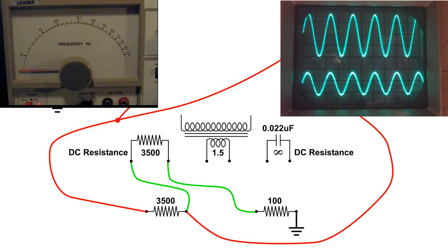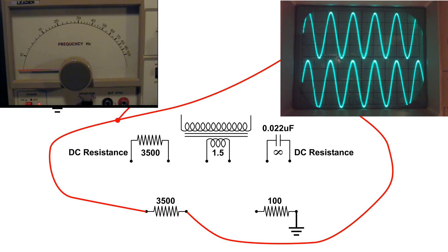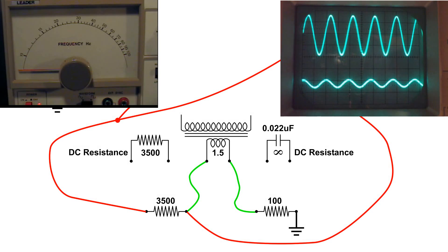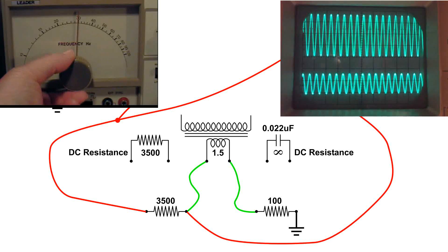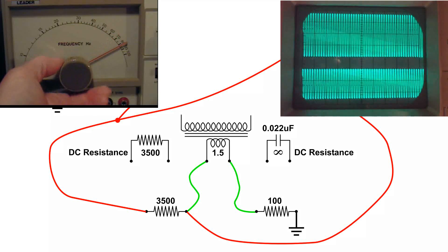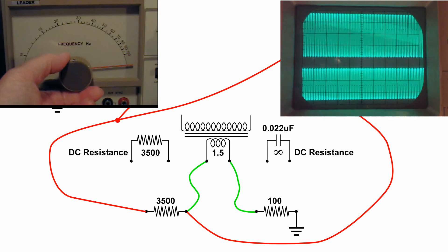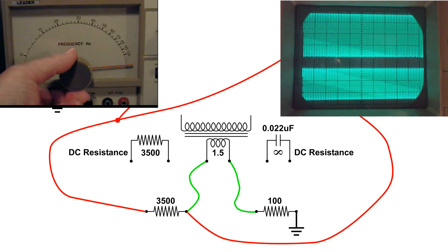Now I'm going to hook up the coil and do the same thing — vary the frequency and see what happens. Now you can see that it's a little bit lower already, but watch what happens when I change the frequency. That level is higher than that 3500 ohm resistor, so at the higher frequency, that coil has a higher impedance than that 3500 ohm resistor.